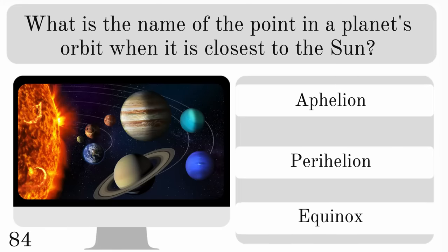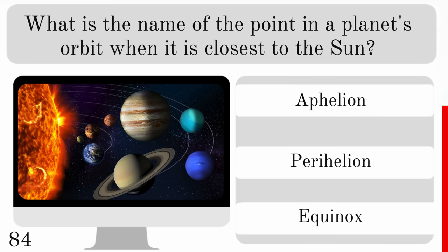What is the name of the point in a planet's orbit when it's closest to the sun? Is it the aphelion, perihelion or equinox? The answer is perihelion.